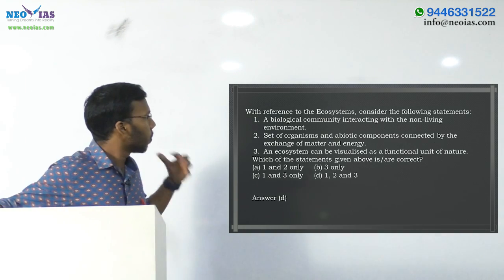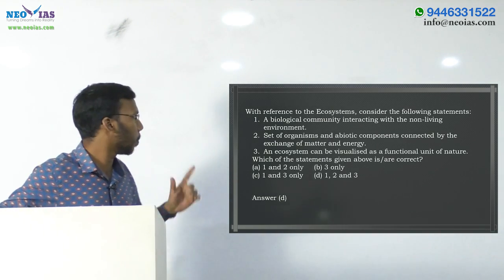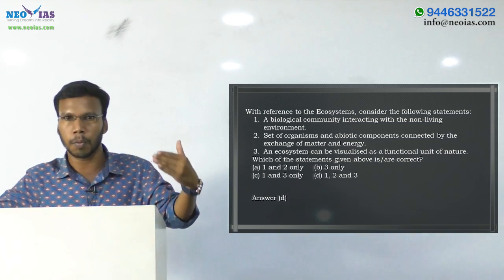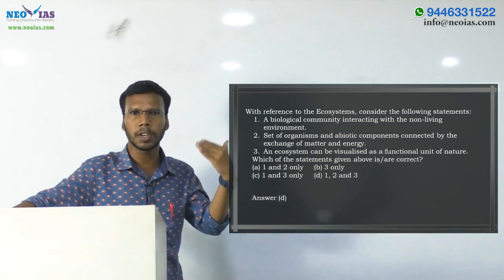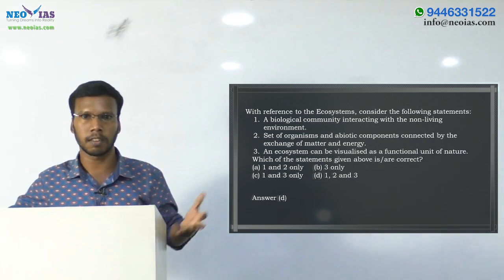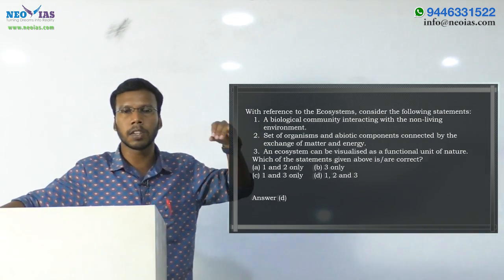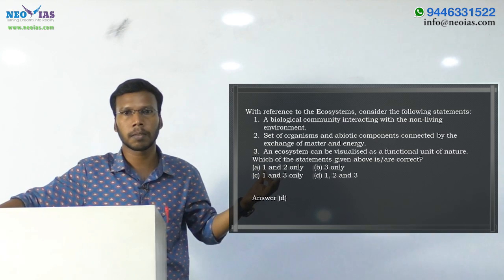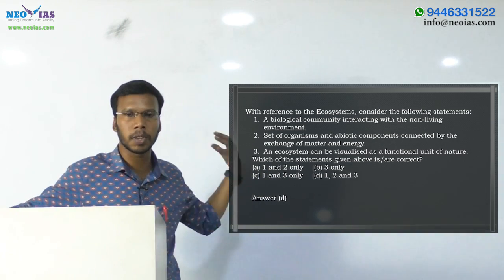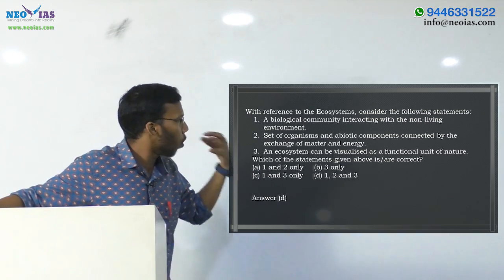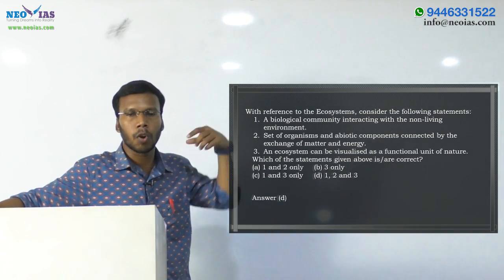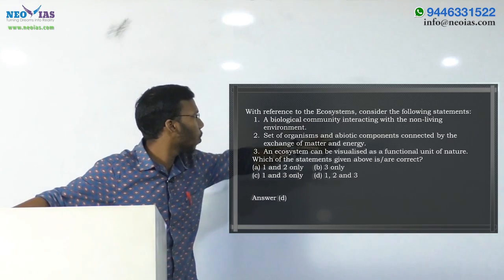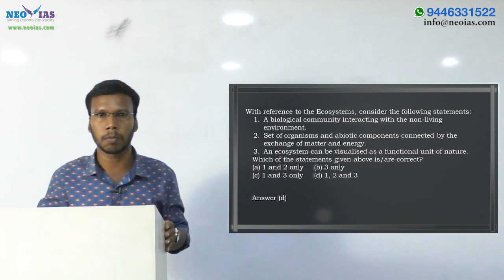Coming back to the question: Statement 1 says a biological community interacting with the non-living environment. We said that living organisms interact with their environment. A biological community means living organisms — considering a region, we have a population of rabbits, tigers, and green plants. Together, all these populations of species are called a community. So a biological community — that means living organisms present in that area — interacting with the non-living environment is called an ecosystem. Therefore, the first statement is correct.